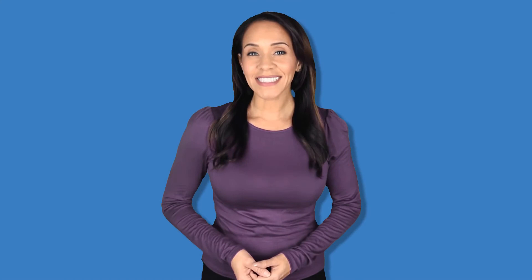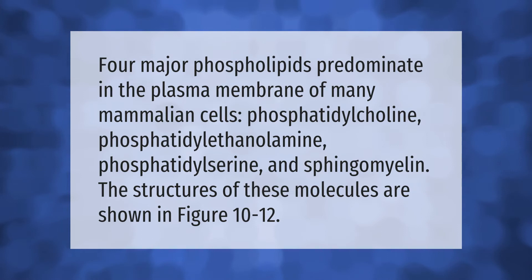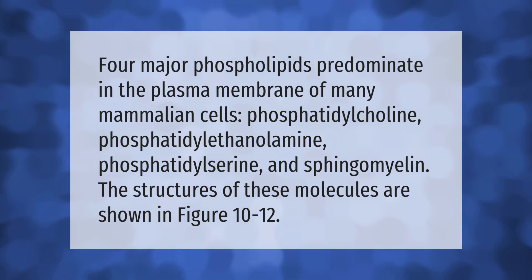Four major phospholipids predominate in the plasma membrane of many mammalian cells: phosphatidylcholine, phosphatidylethanolamine, phosphatidylserine, and sphingomyelin. The structures of these molecules are shown in figure 10 to 12.